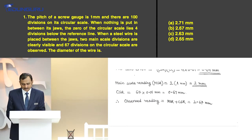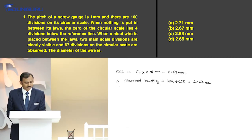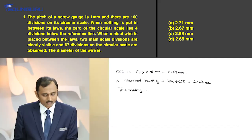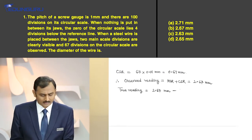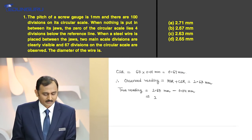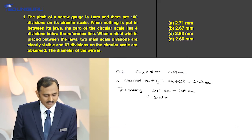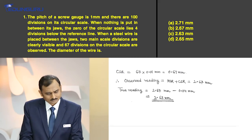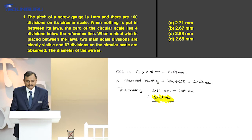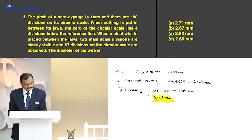Now, since it's a positive zero error, the true reading equals the measured value minus the zero error: 2.67 mm − 0.04 mm = 2.63 mm. This is the diameter of the steel wire. So C is the correct answer.